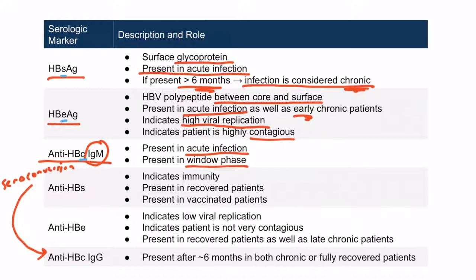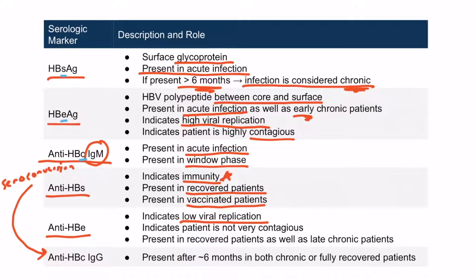The body later forms antibodies against the surface antigen. Once these are present, the patient is considered immune to hepatitis B. This will be seen in the blood of patients who have recovered from the disease or in patients who have been vaccinated — either way, the patient is considered immune. Next, the body forms antibodies against the E antigen. Once antibodies are formed against the E antigen, viral replication slows down and the patient is not very contagious. These antibodies can be present in patients who have recovered, as well as patients in the late chronic phase.